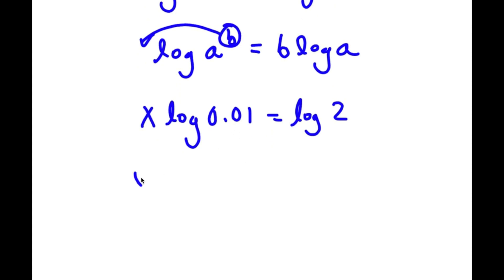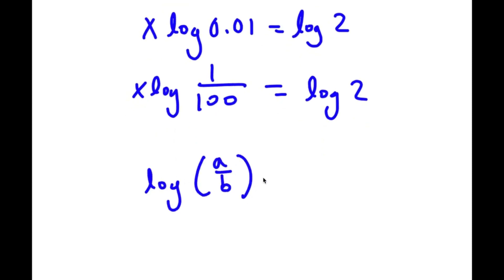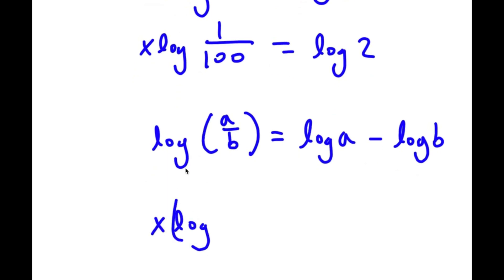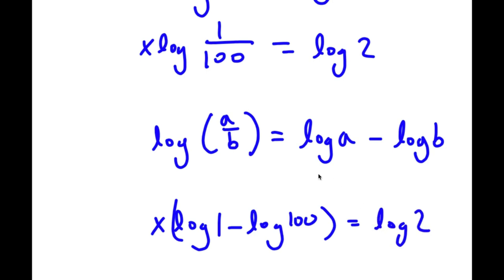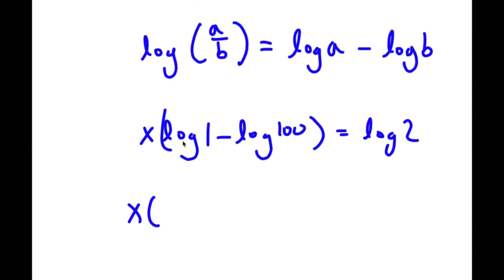Now, 0.01 is the same thing as 1 over 100. So I have x times log(1/100) is equal to log 2. Using the log quotient rule, log(a/b) equals log a minus log b. So I rewrite this as x times (log 1 minus log 100). Log 1 equals 0 and log 100 equals 2, so I have x times (0 minus 2) is equal to log 2.